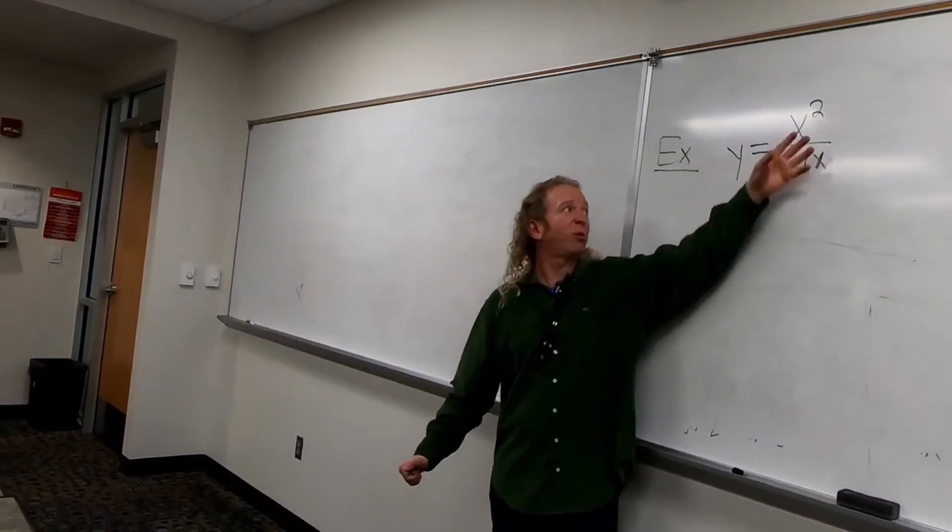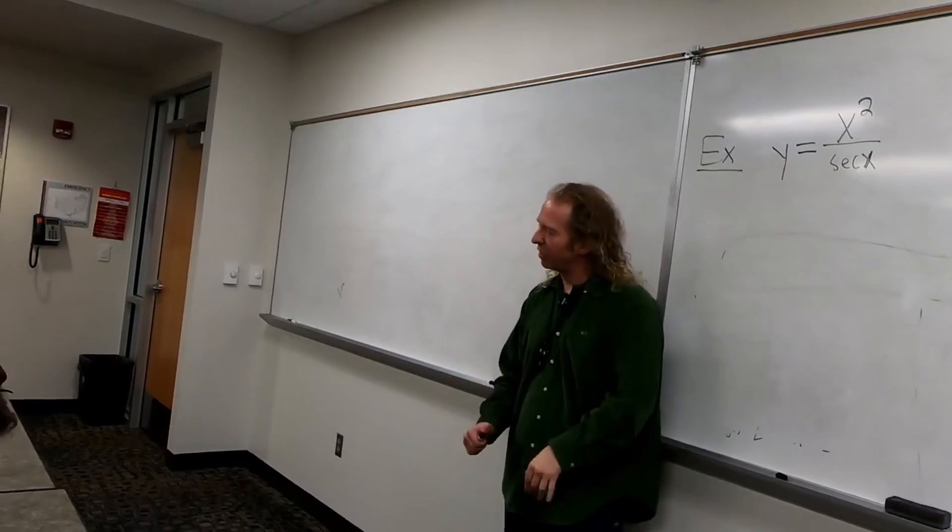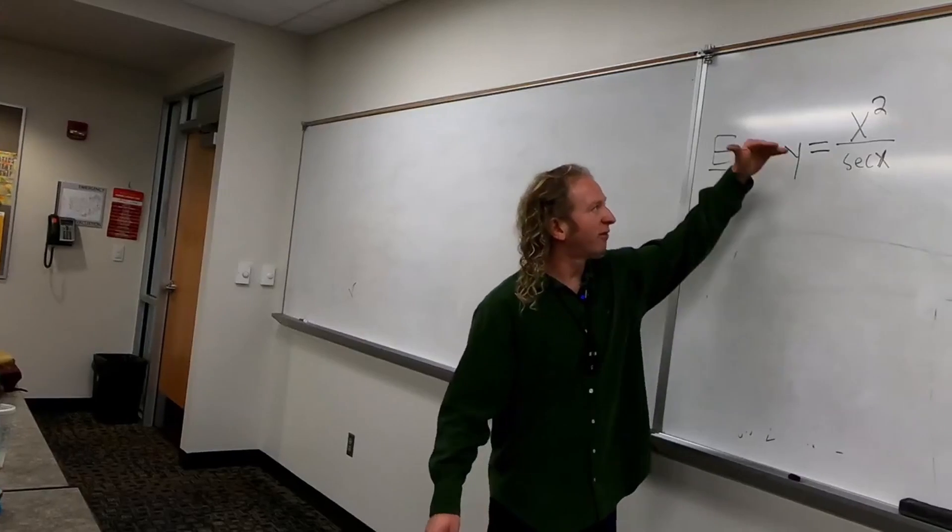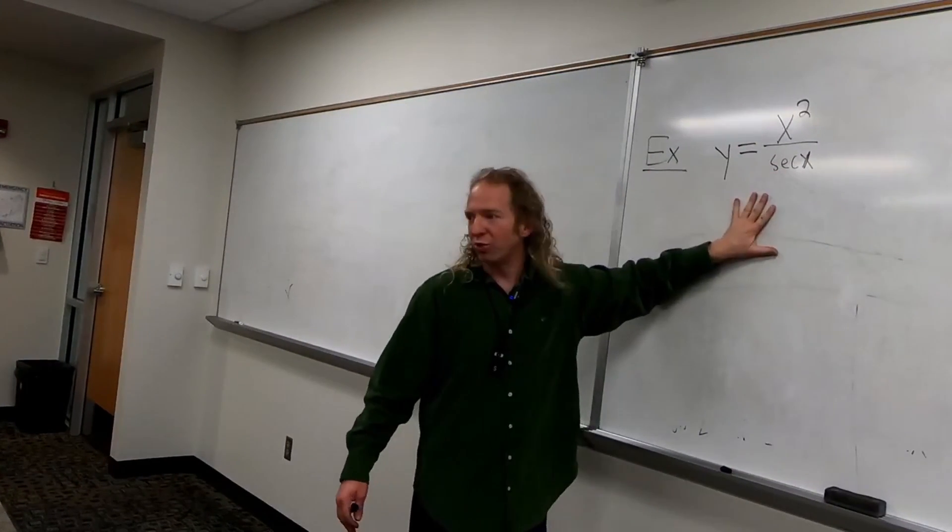So you could still bring it up and use the product rule, but it's usually not a good idea. It usually makes things worse. So whenever you have a variable over a variable and you can't simplify it, quotient rule.